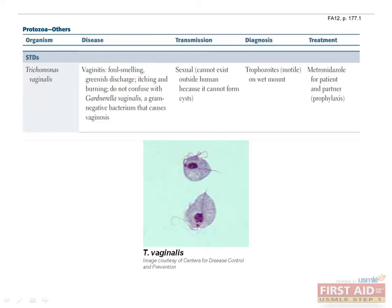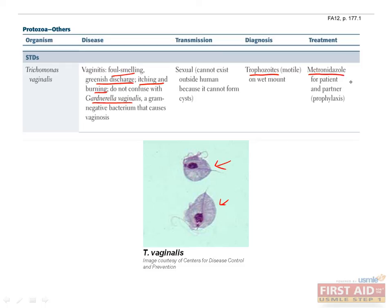Finally, the last protozoan causes a sexually transmitted disease: Trichomonas vaginalis, which can cause vaginitis characterized by foul-smelling, greenish discharge, itching, and burning. Don't confuse this with Gardnerella vaginalis, the gram-negative bacteria that causes vaginosis, characterized by foul discharge usually described as gray and fishy-smelling. Gardnerella is not an STD, which differentiates it from Trichomonas, a protozoan that cannot survive outside human hosts because it doesn't form cysts. Diagnose Trichomonas if you see moving trophozoites on a wet mount of the vaginal discharge. Both Gardnerella and Trichomonas can be treated with metronidazole.